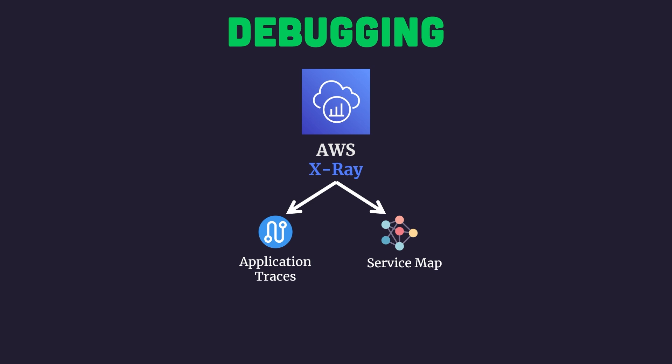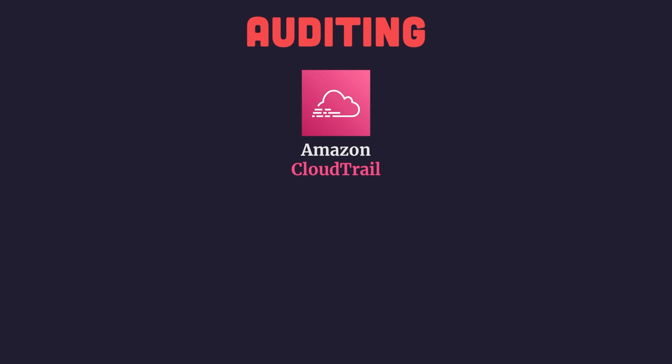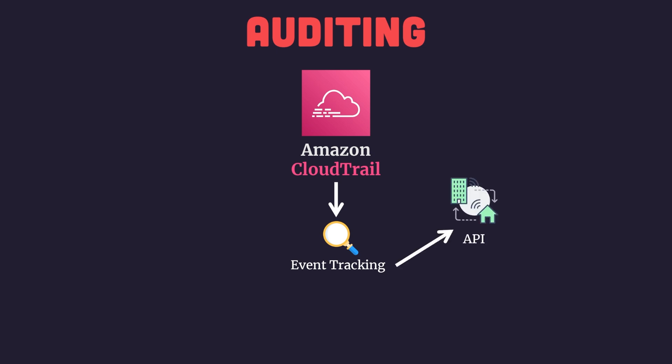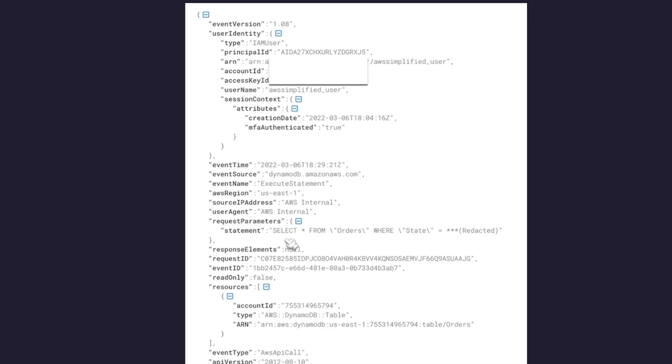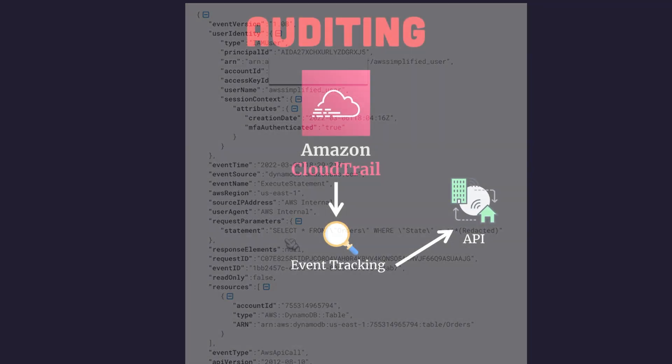So now that we know how to monitor and debug our services, let's learn how to keep track of all the actions inside our AWS account. This can be considered auditing, and the service that helps us do that is Amazon CloudTrail. Amazon CloudTrail is a security and compliance-based service whose primary role is to help you track events across your AWS account. These events fall into two categories. The first is API actions — all actions that create, read, update, or delete any piece of infrastructure in your AWS account. The metrics emitted from CloudTrail contain detailed information of who performed the action, what they did, when they performed it, and other contextual metadata. CloudTrail for API access is enabled by default on every AWS account.